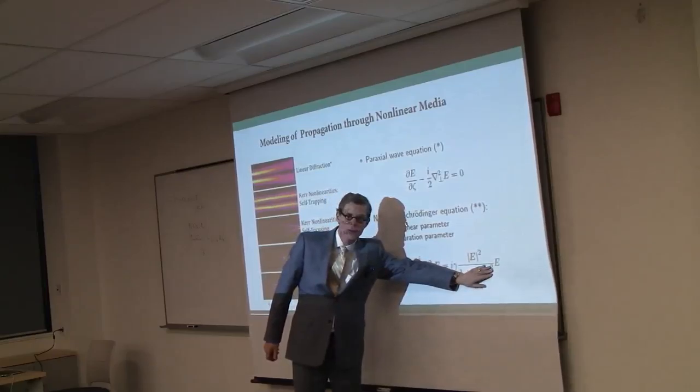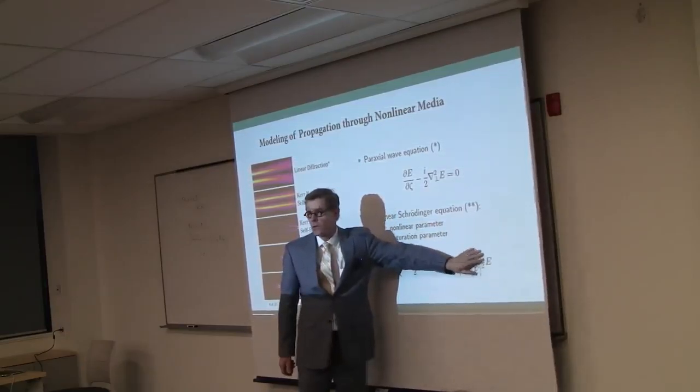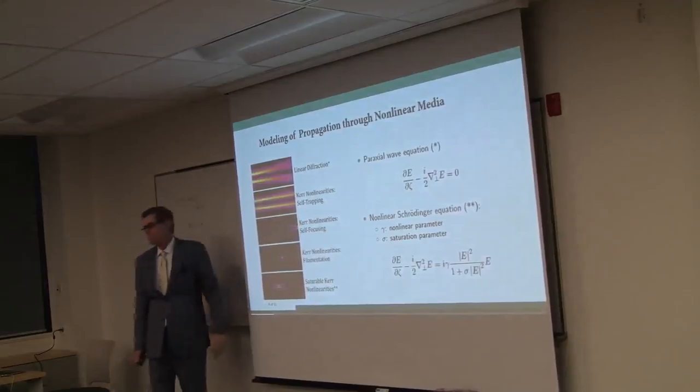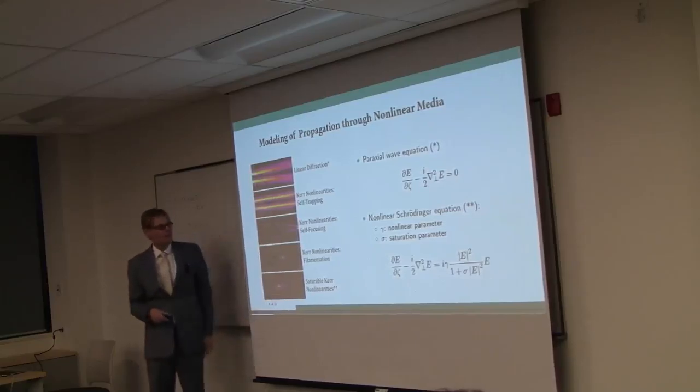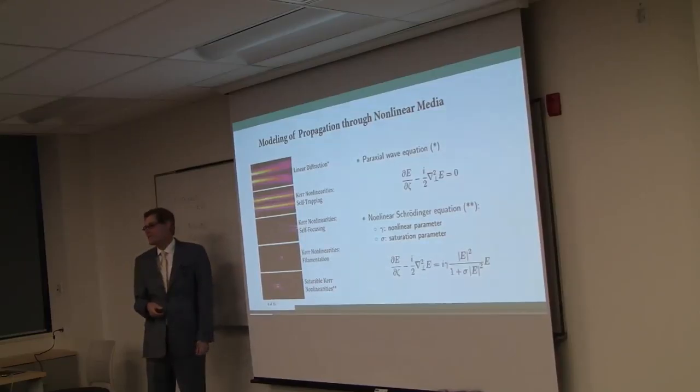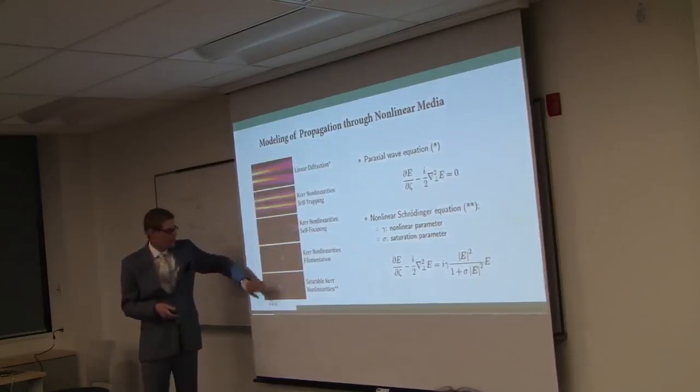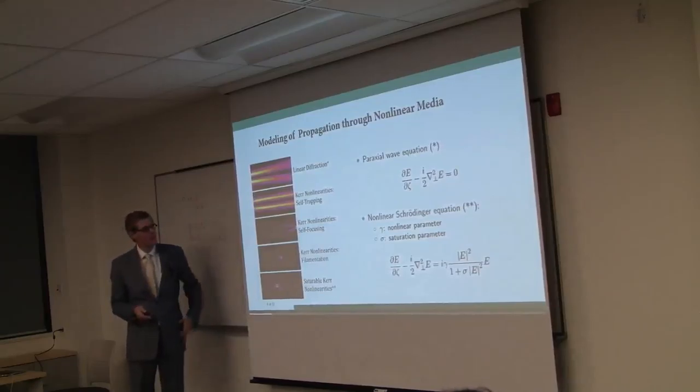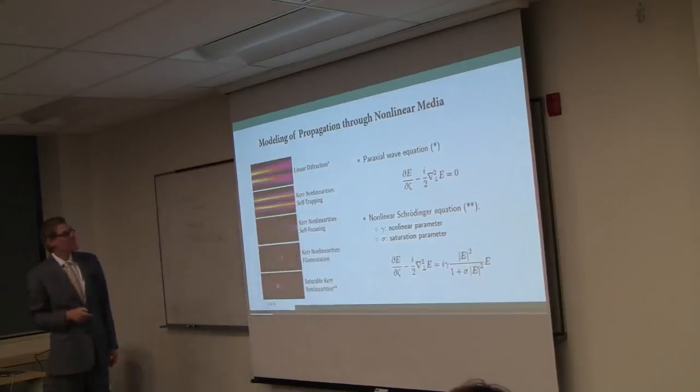And here we're modeling this as a saturable nonlinearity. So this would be your standard chi-3 or n-2 type of nonlinear response. Here in the denominator, we show that as the intensity gets large, you tend to saturate the nonlinear response. And here are some simulations. These are just so pretty, I had to show them, even if it's not entirely needed. So all the sorts of processes that we've talked about already can just come out of a numerical integration of this very simple nonlinear Schrodinger equation.